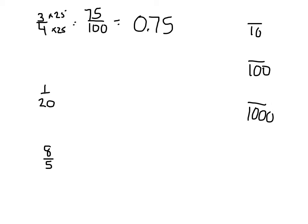On the next problem, I have one-twentieth, and again, I cannot go to tenths right away. So I'm going to go to hundredths, and that's times five. Do the same to the numerator. And I get five hundredths, or five hundredths.